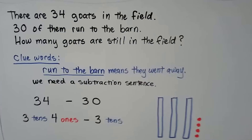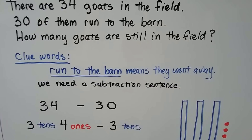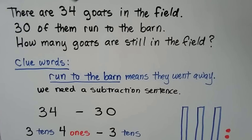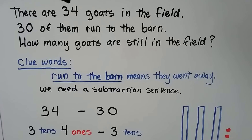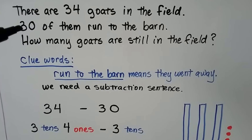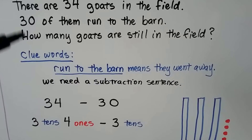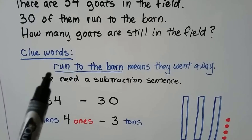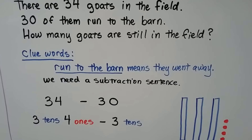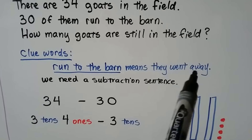Let's try one last one. There are thirty-four goats in the field. Thirty of them run to the barn. How many goats are still in the field? There are thirty-four goats in a field — can you picture that? Thirty of them run to the barn. How many goats are still in the field? That's what we need to find. Our clue words are 'run to the barn.' Thirty of them run to the barn, meaning they went away. So we need a subtraction sentence to show they went away.